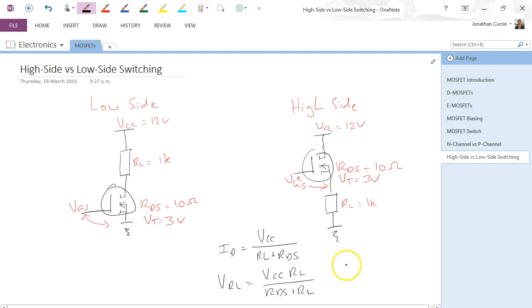Now, we know because RL is so much larger than RDS, this is approximately going to be equal to VCC. So, let's say, 11.9 volts is what we work it out to be. So, the voltage here, VRL equals 11.9 volts. And VRL is actually equal to Vs because of the way it's constructed there. Voltage between source and ground is the same as voltage across RL.